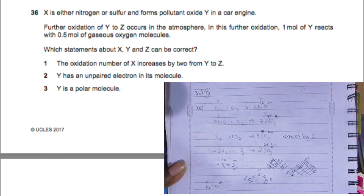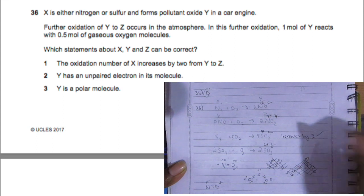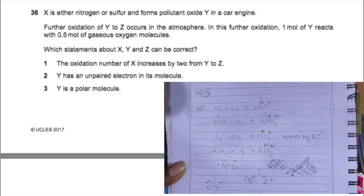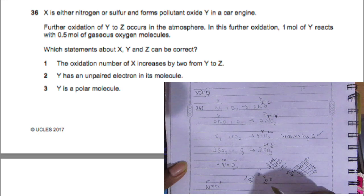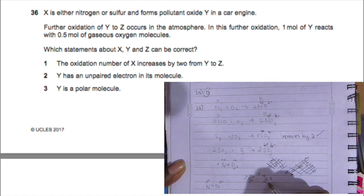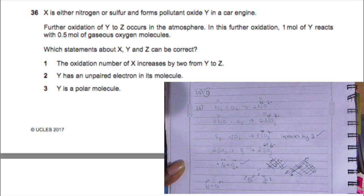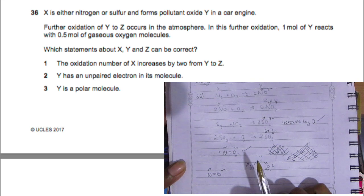Y has an unpaired electron in its molecule. Let's draw Y: nitrogen monoxide and sulfur dioxide. Yes, in the nitrogen there is an unpaired electron. With sulfur, that's not true, but it's okay because they told us X is either nitrogen or sulfur. Option two is correct.